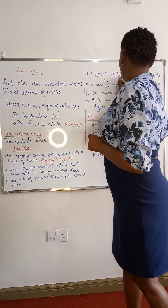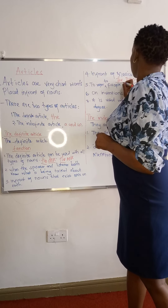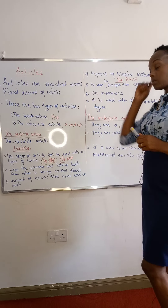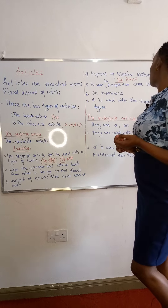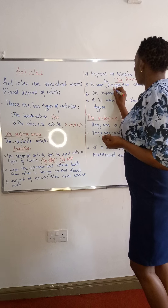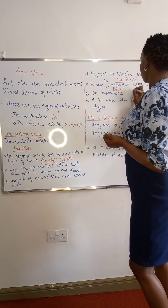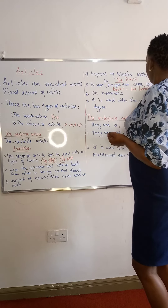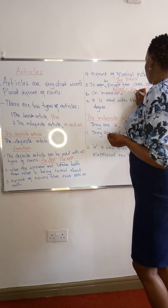It is also used in front of musical instruments. You can talk of 'the piano'. You can see that the definite article 'the' has been used in front of musical instruments. Again, 'the' is used to refer to people from some countries. People from Britain can be referred to as 'the British', and people from Congo as 'the Congolese'.